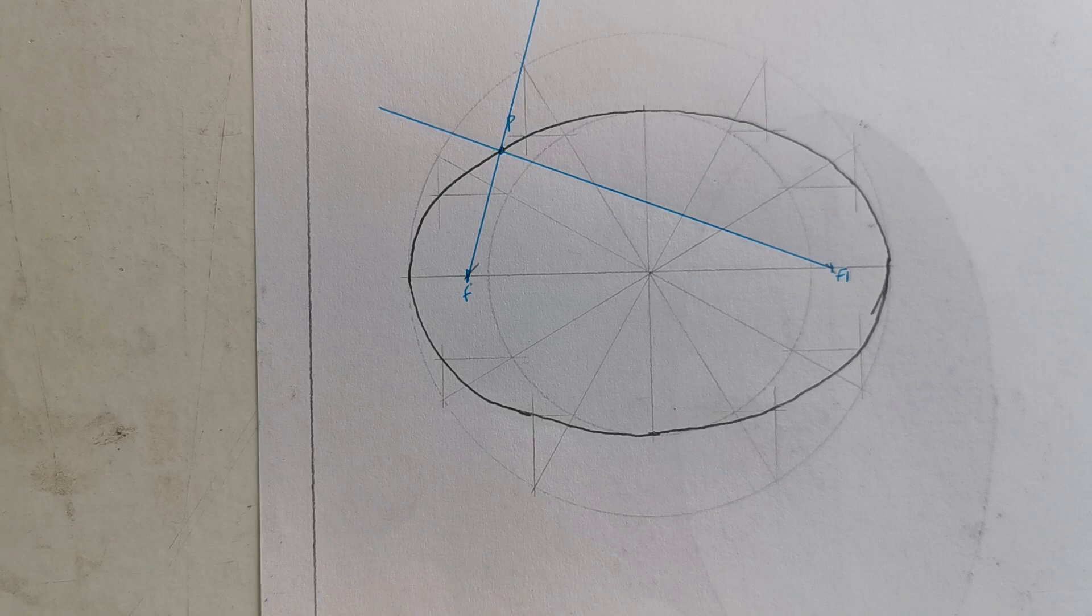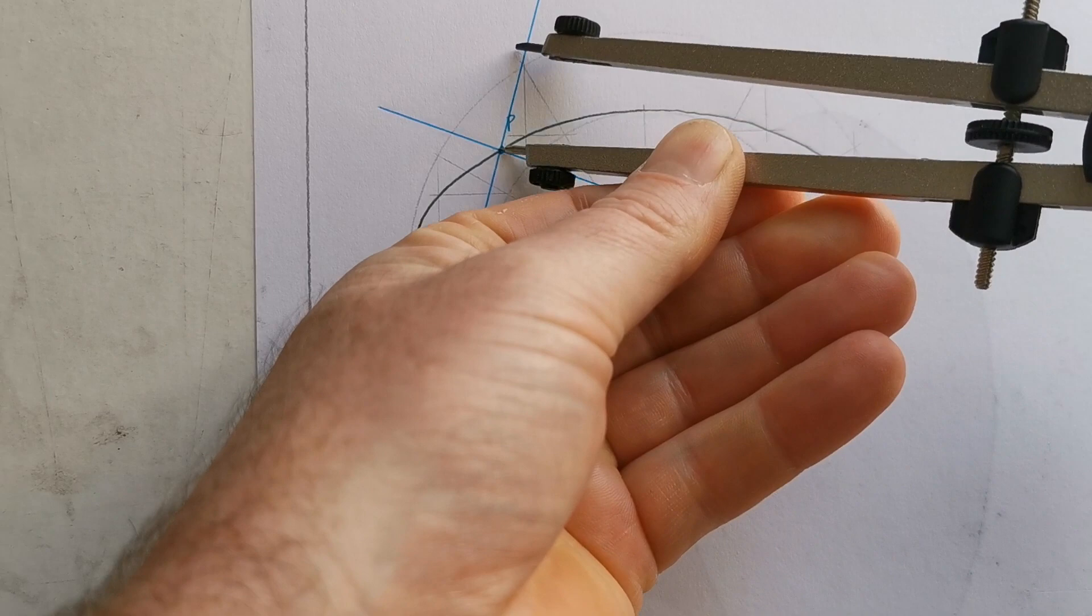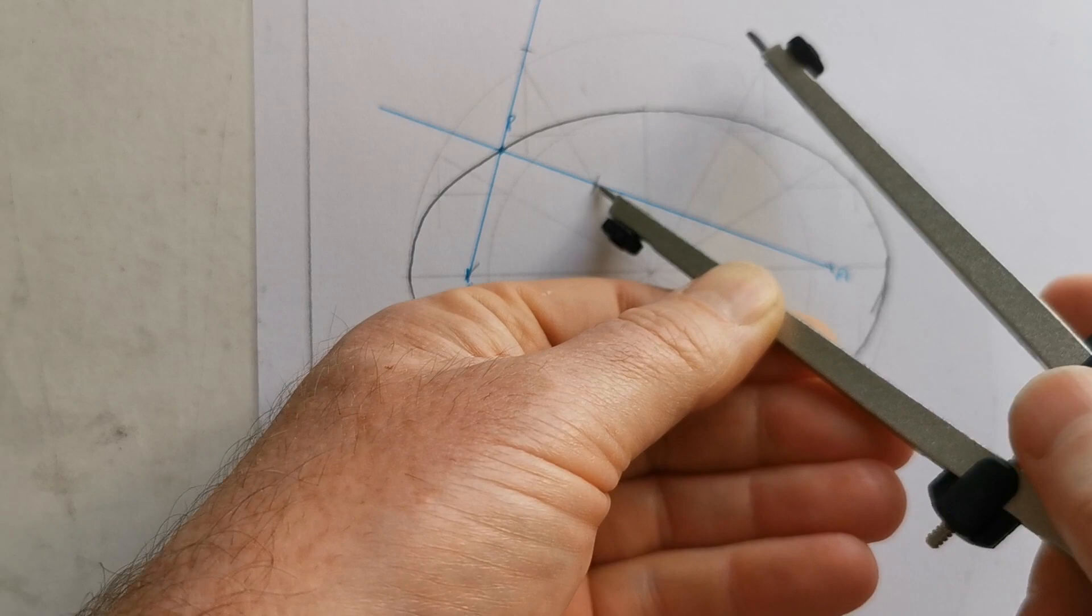Using the compass I'm going to bisect this angle here. So open the compass, swing the same distance out both lines, then I would open the compass a bit bigger and an arc from each of those.